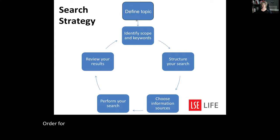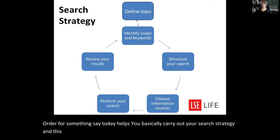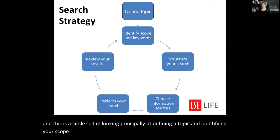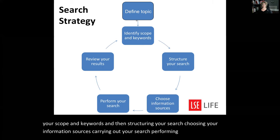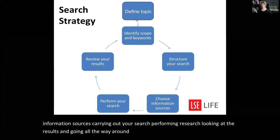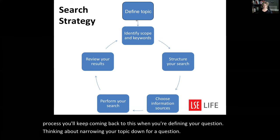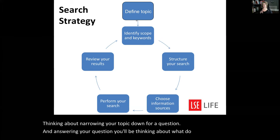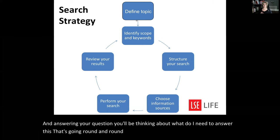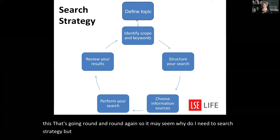All of what I'm going to say today helps you carry out your search strategy. This is a circle: I'm looking principally at defining a topic and identifying your scope and keywords, then structuring your search, choosing your information sources, carrying out your search, looking at the results, and going all the way around again. You'll keep coming back to this when you're defining your question and thinking about narrowing your topic down.